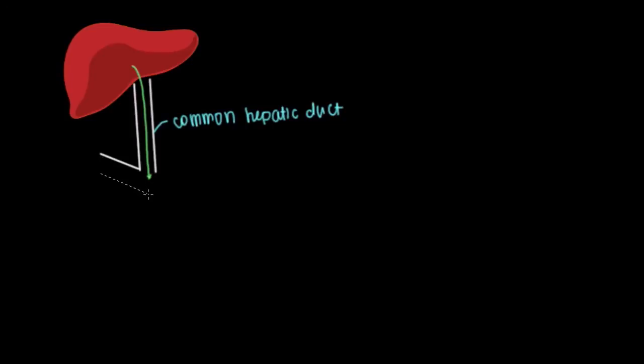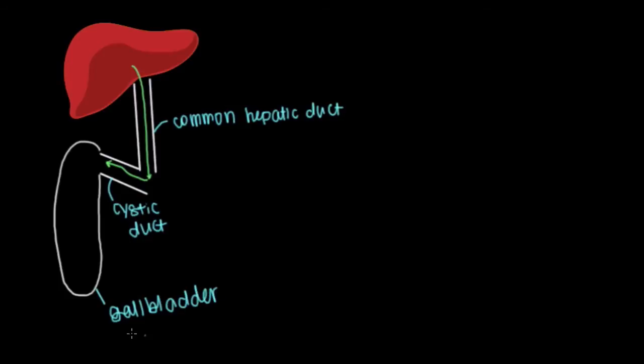One of the first places it's going to go is this duct right here, called the cystic duct. This is the next place we see bile flow after the common hepatic duct. The cystic duct will lead our bile to be stored momentarily in an organ that sits as a blind pouch - the gallbladder. The gallbladder has one purpose only: storing our bile.